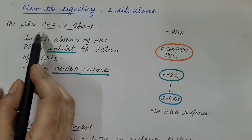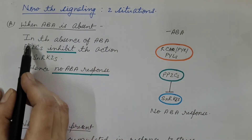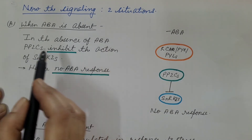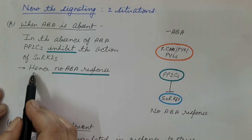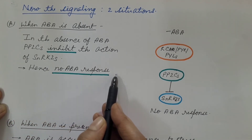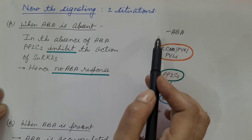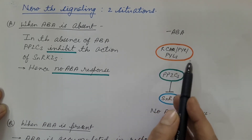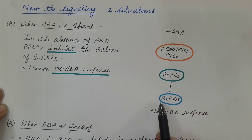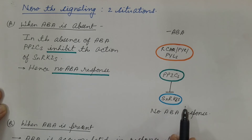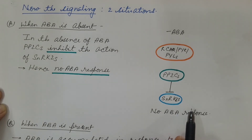There are two situations. First, when abscisic acid is absent: in the absence of ABA, PP2Cs inhibit the action of SNRK2s, preventing their autophosphorylation. As a result, there is no phosphorylation of downstream targets and hence no abscisic acid response.